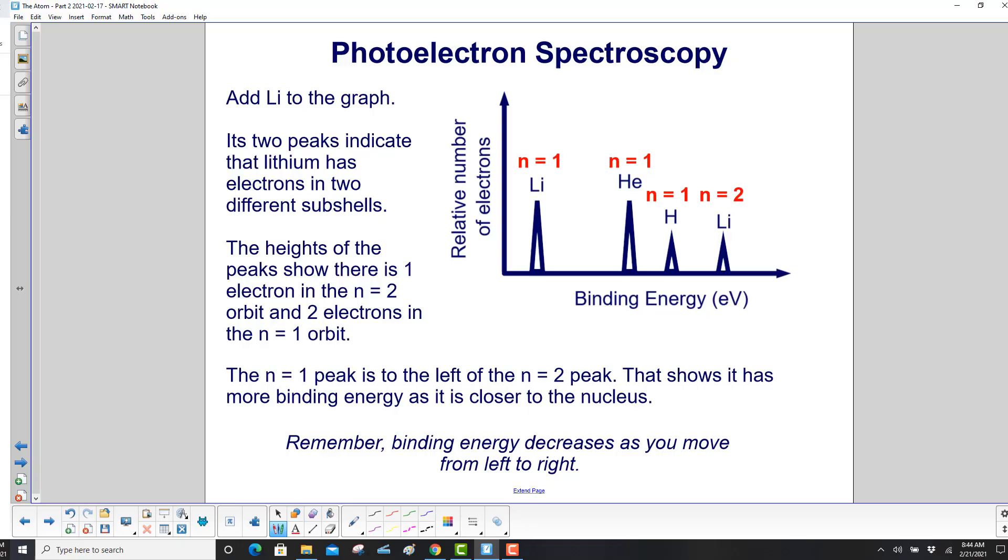Add lithium to the graph, here and here. Its two peaks indicate that lithium has electrons in two different subshells. The heights of the peaks show there is one electron in the n equal 2 orbit and two electrons in the n equal 1 orbit.